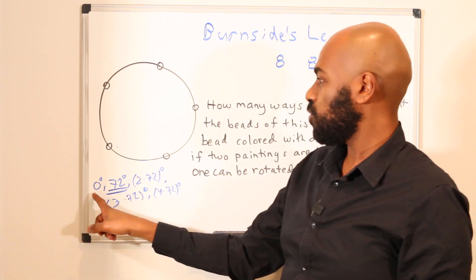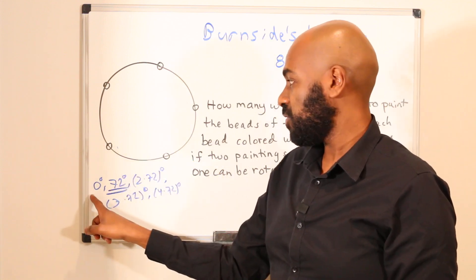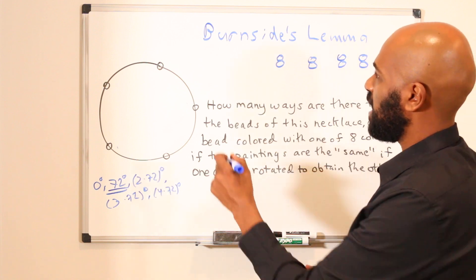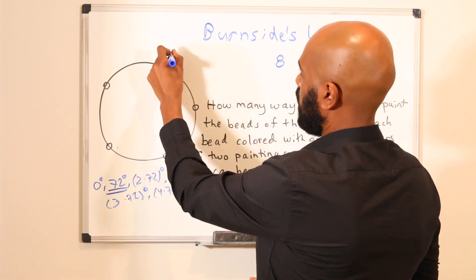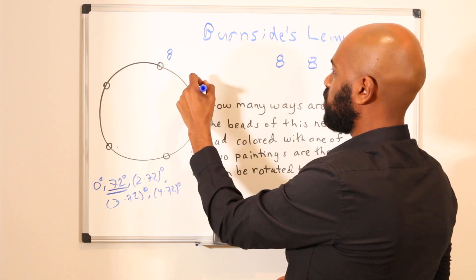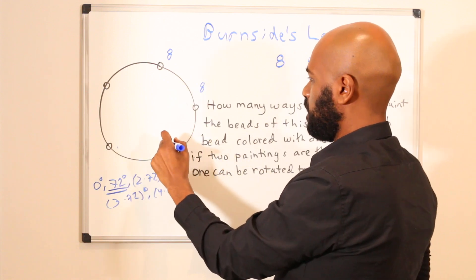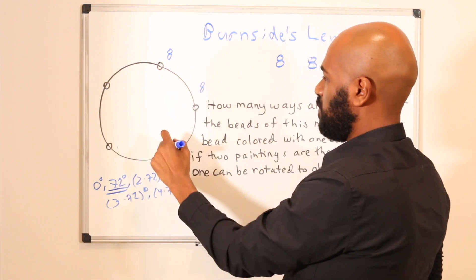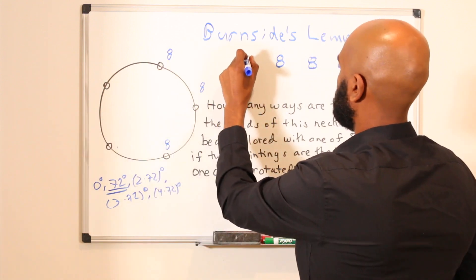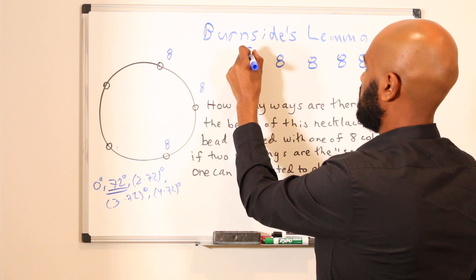So finally we have this 0 degree rotation. Now any coloring of the beads is going to be fixed under this because we're not moving the necklace at all, right? And the number of colorings, well, we have 8 possible colors that we can choose for this bead, and then 8 subsequent ones for this bead, independent of what we choose for this one. So there's 64 in total, and then 8 more for this, giving 8 cubed, etc. And so the number fixed under 0 degree rotation is 8 to the 5.